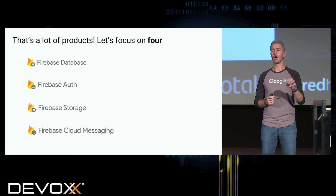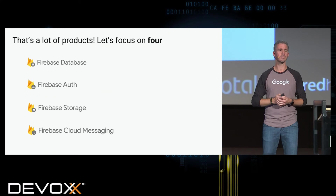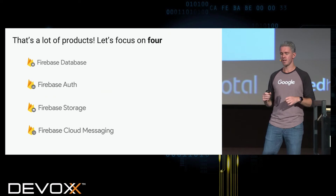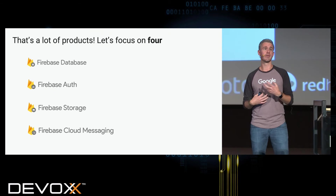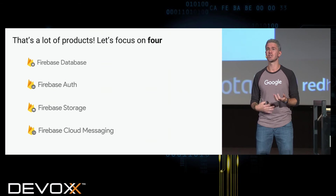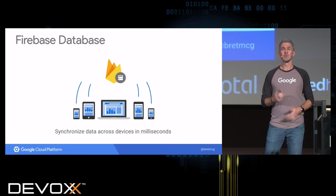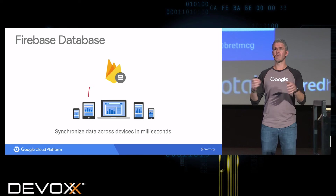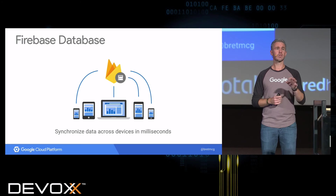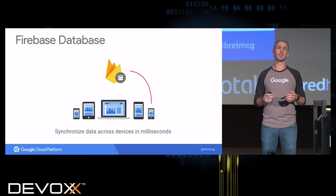Today we're going to focus on four: Firebase Database (the real-time database), Firebase Auth, Storage, and Cloud Messaging — the ones most relevant for a web application. The real-time database gives you the ability to synchronize changes across multiple clients within milliseconds. You just write to the JSON database and all subscribing web apps, Android apps, or iOS apps will get updated.